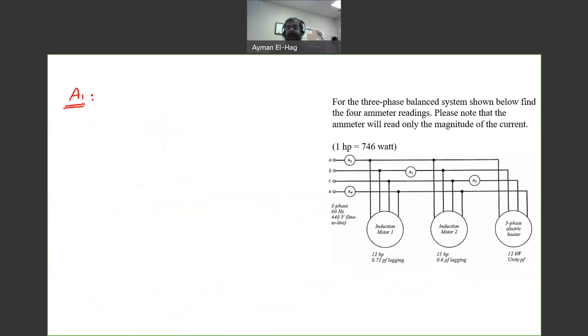For a1, I need to find the three loads. I need to find first P3, which is equal to 12 horsepower times 746, which equals 8.952 kilowatt. Q3 will equal P3 tan theta 3, so I need to find theta 3.